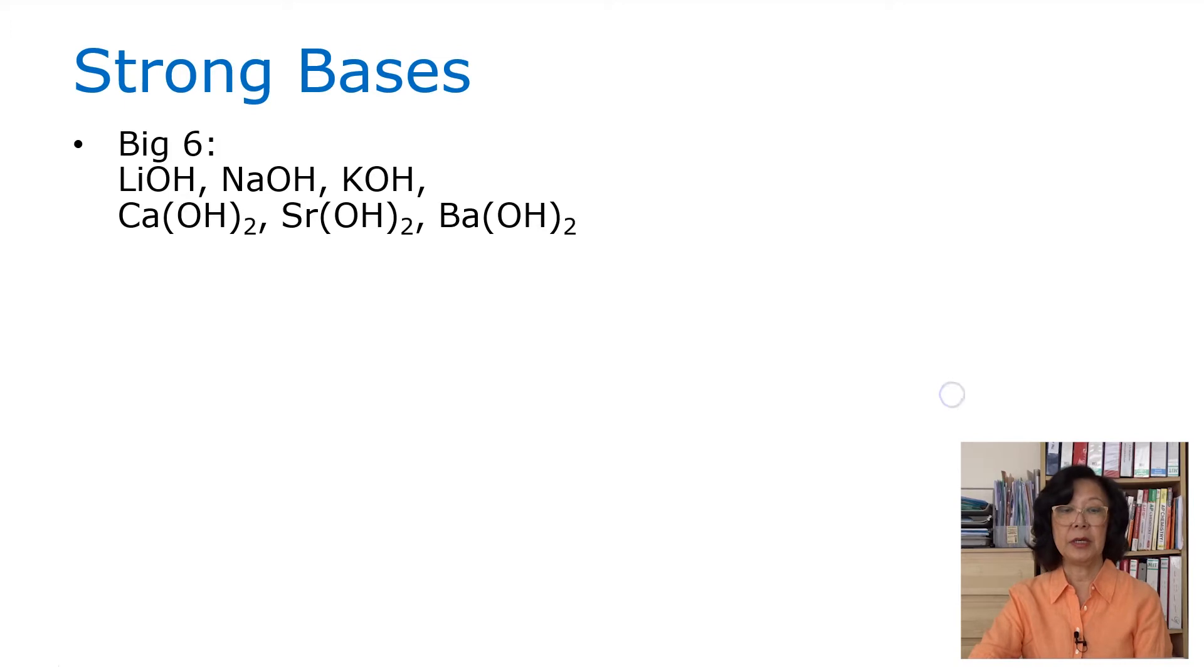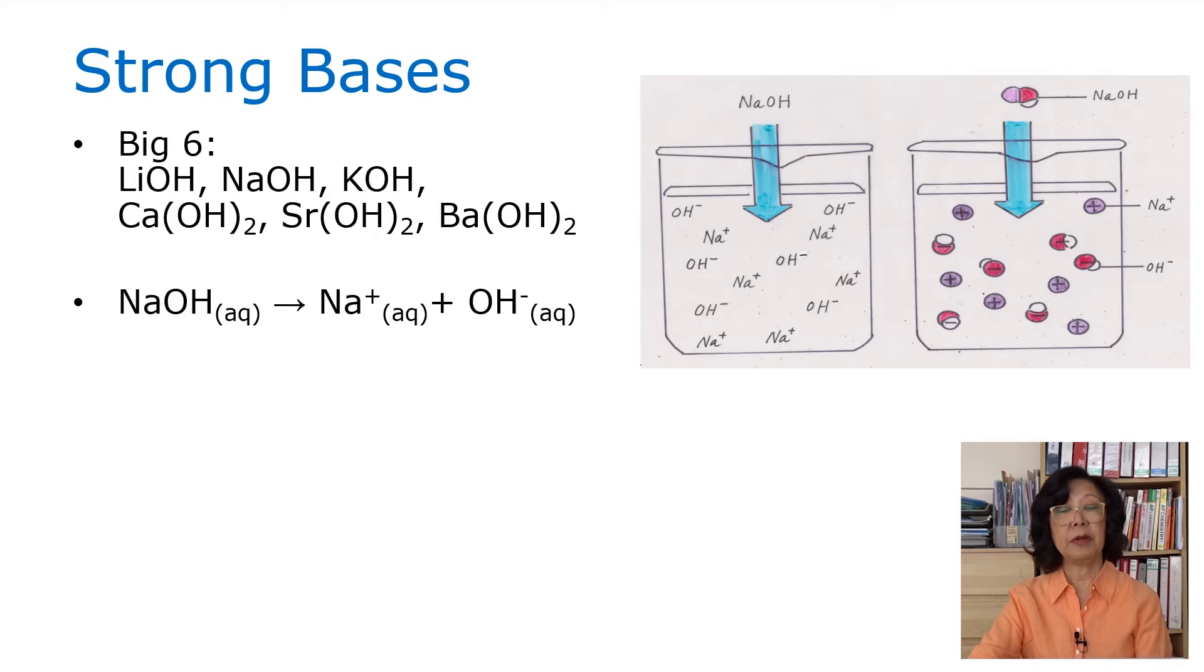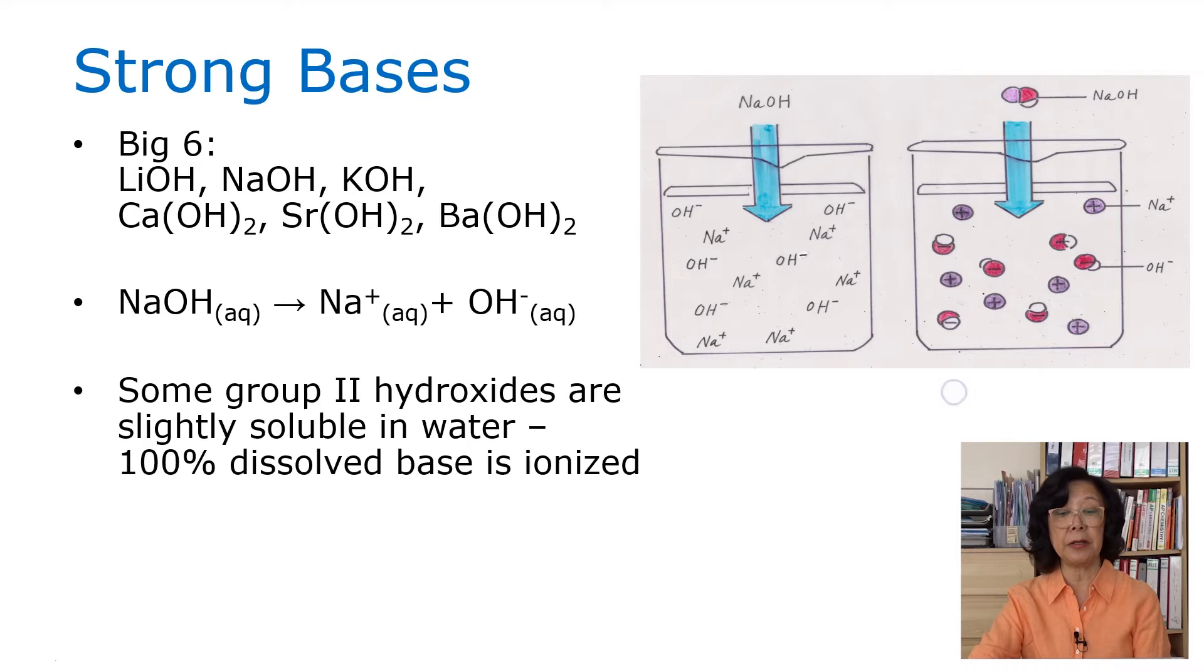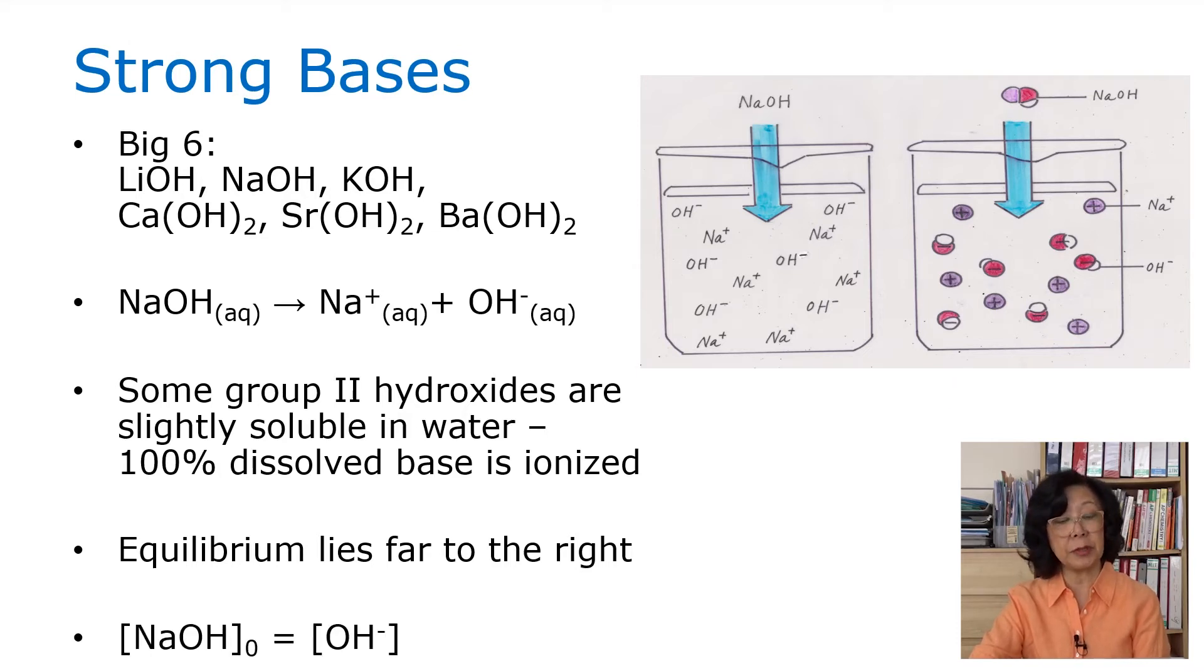Strong bases. If we look at group 1, we have lithium, sodium, and potassium hydroxide. And group 2, we have calcium, strontium, and barium hydroxide. When we write the equation, sodium hydroxide ionizes completely to form sodium ion and hydroxide ions. There are some group 2 hydroxides that are only slightly soluble in water, but when they dissolve, 100% is ionized for that portion. Equilibrium lies far to the right. You can see there's only sodium and hydroxide ions floating around in the beaker. Initial concentration of sodium hydroxide is equal to the hydroxide ion concentration.